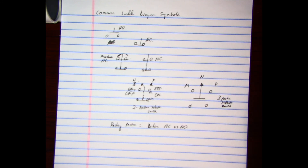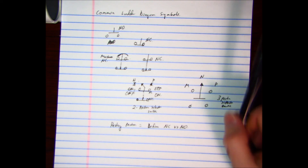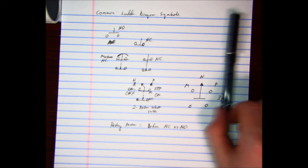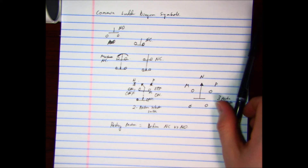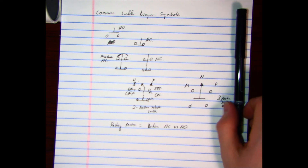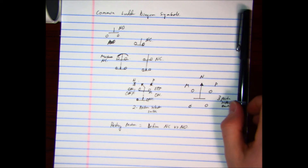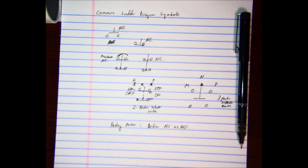That's all I have to show you in this video. These are just some common ladder diagram symbols — mainly buttons and selector switches. Thanks for watching.